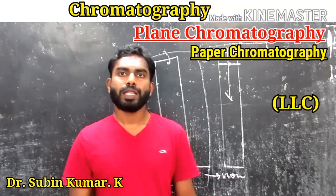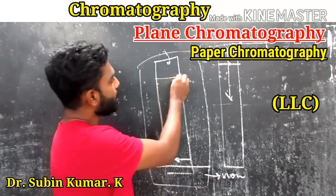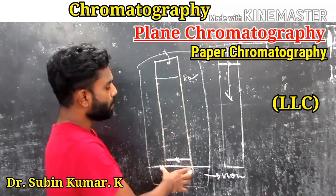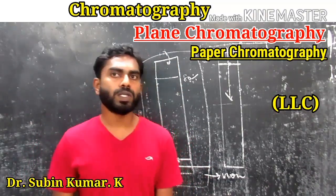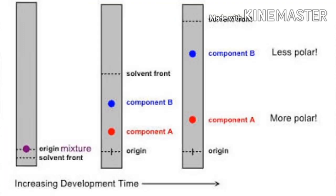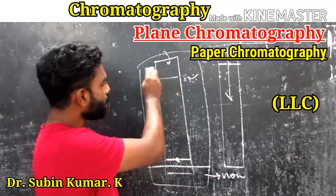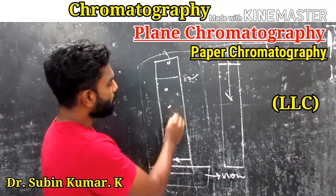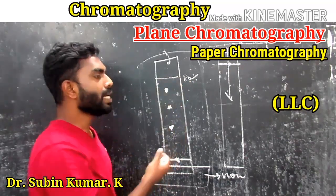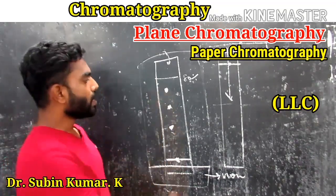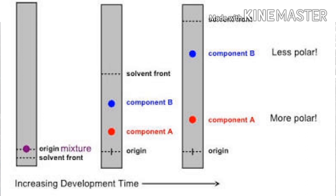After some time, when the solvent has moved up to about 80–90% of the paper, the paper strip is removed, the solvent front is marked on it, and it is dried. The colored components will appear as a number of colored spots at different distances. For colorless components, the paper is sprayed with a sensitive reagent capable of forming colored compounds with the components.